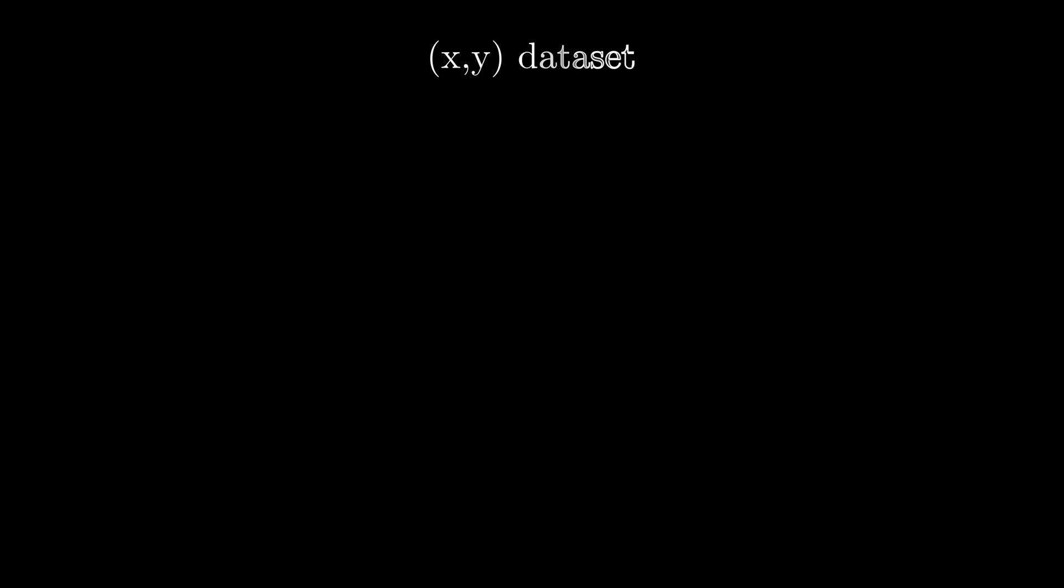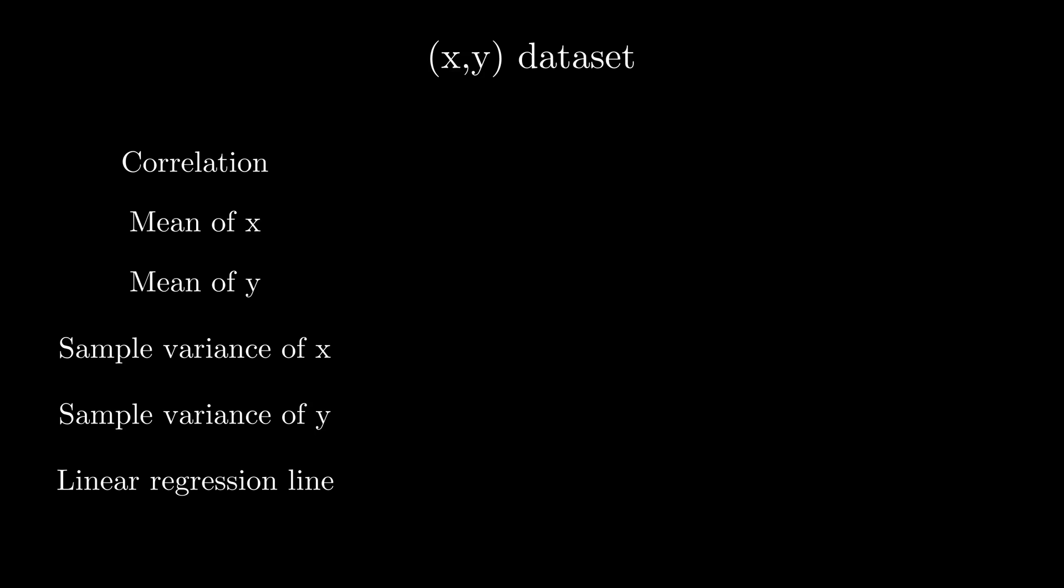But what should we do when common sense is not applicable? Perhaps we should measure more than just correlation. Mean, variance, sample variance, linear regression. This is already quite a lot, so if I give you particular values, the dataset with such properties should be unique, right?